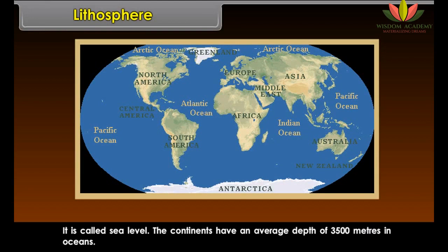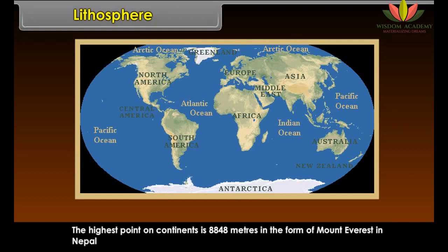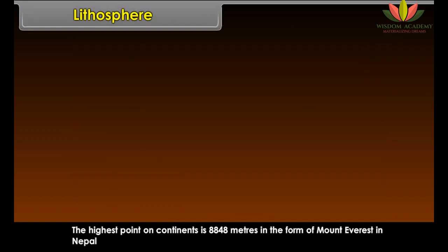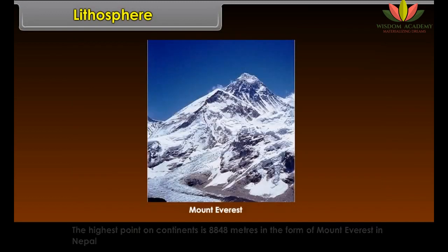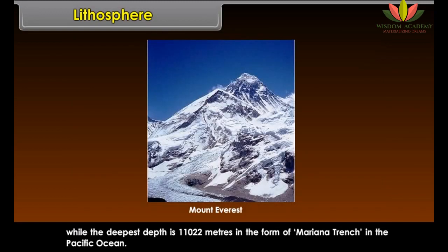The continents have an average depth of 3,500 meters in oceans. The highest point on continents is 8,848 meters in the form of Mount Everest in Nepal, while the deepest point is 11,022 meters in the form of the Mariana Trench in the Pacific Ocean.